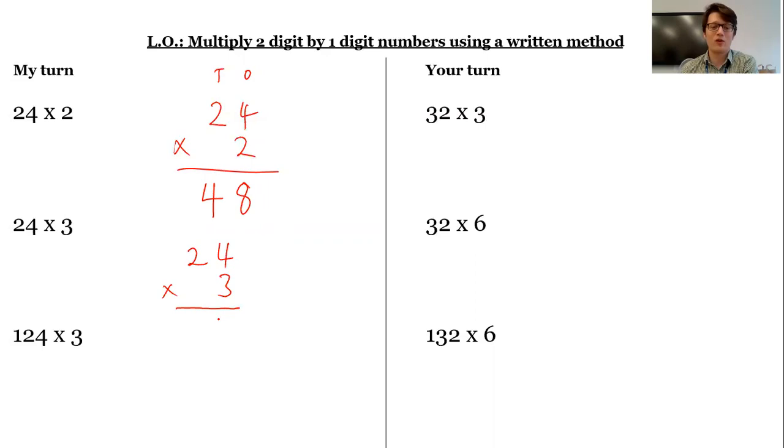A bit like when I add, I need to regroup. So I'm going to put the 2 ones in the ones column and I'm going to regroup that 10 over into the tens column. Then I do 3 times 2, which is 6. And remember to add that regrouped 10, 6 add 1 is 7.